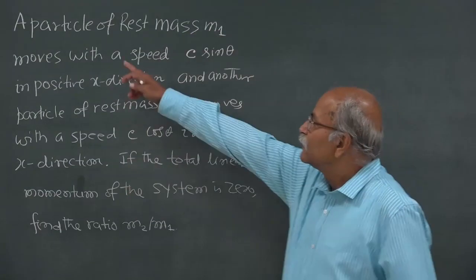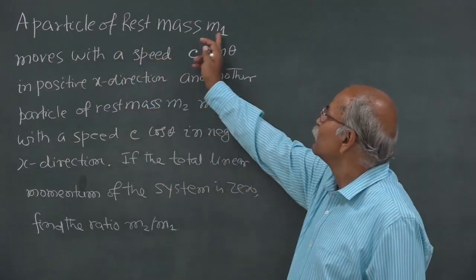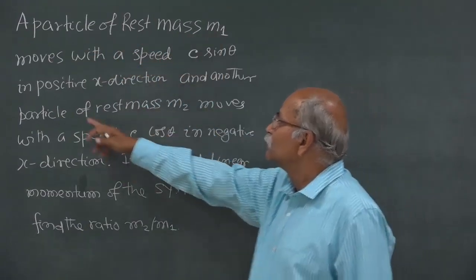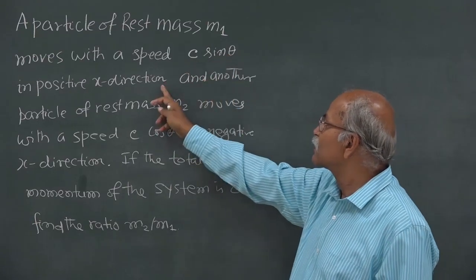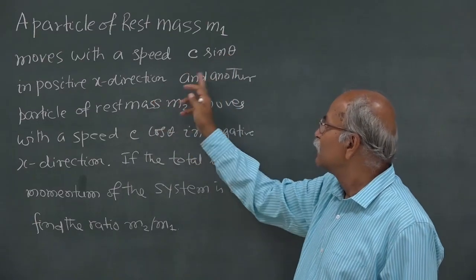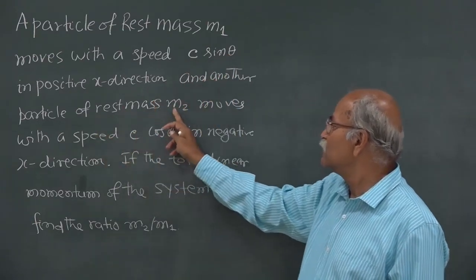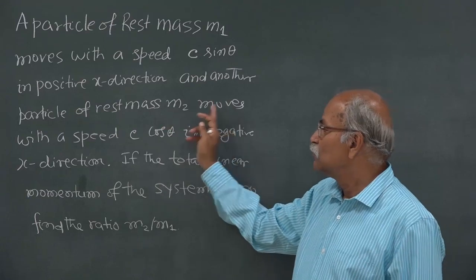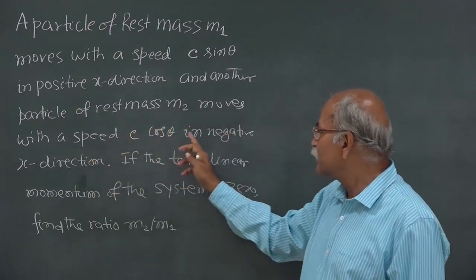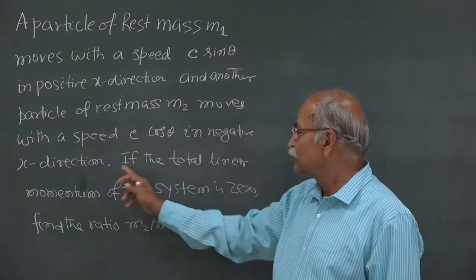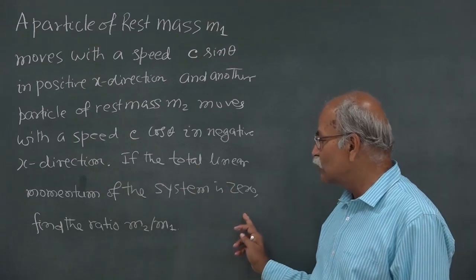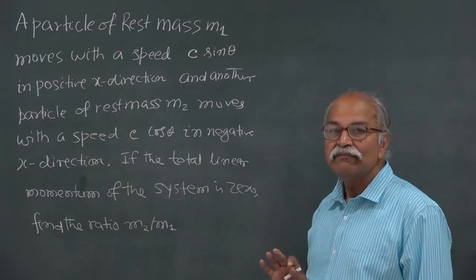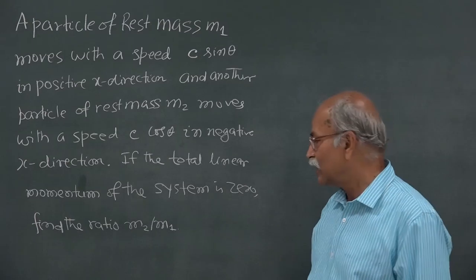Our first problem: a particle of rest mass m₁ moves with a speed c·sinθ in the positive x direction, and another particle of rest mass m₂ moves with a speed c·cosθ in the negative x direction. If the total linear momentum of the system is 0, find the ratio m₂/m₁.